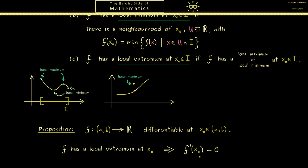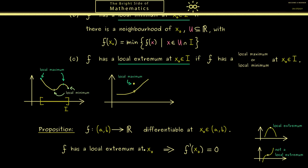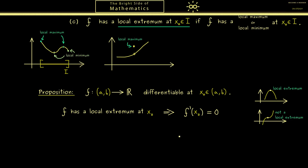Please note immediately that this does not work the other way around. We can explain both things in a picture: if we have a local maximum, the slope at the point, if it exists, needs to be 0 — so we have a horizontal tangent. However, this horizontal tangent cannot be sufficient for a local extremum, because we also have it at an inflection point of a curve, and there we don't have a local minimum or maximum. Therefore please always keep this direction in mind.